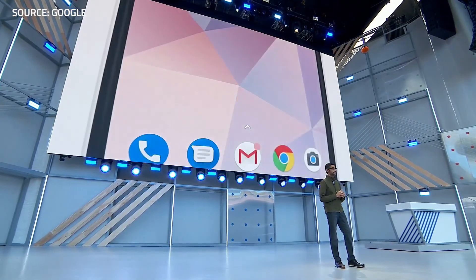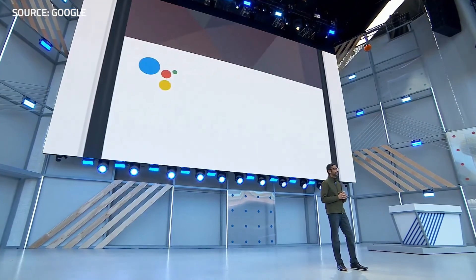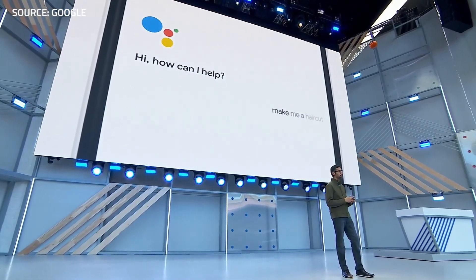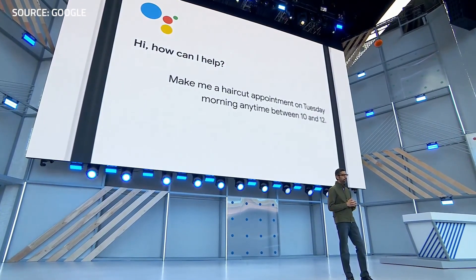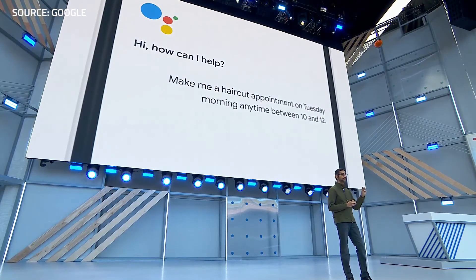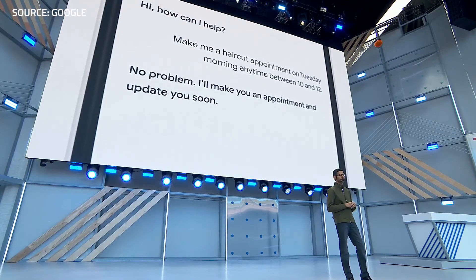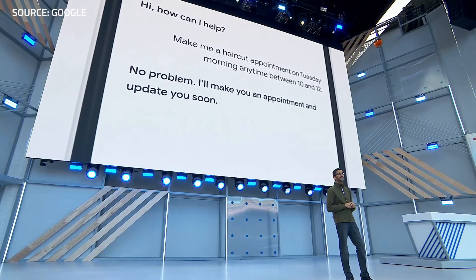Let's say you want to ask Google to make you a haircut appointment on Tuesday between 10 and noon. What happens is the Google Assistant makes the call seamlessly in the background for you. So what you're going to hear is the Google Assistant actually calling a real salon to schedule the appointment for you. Let's listen.